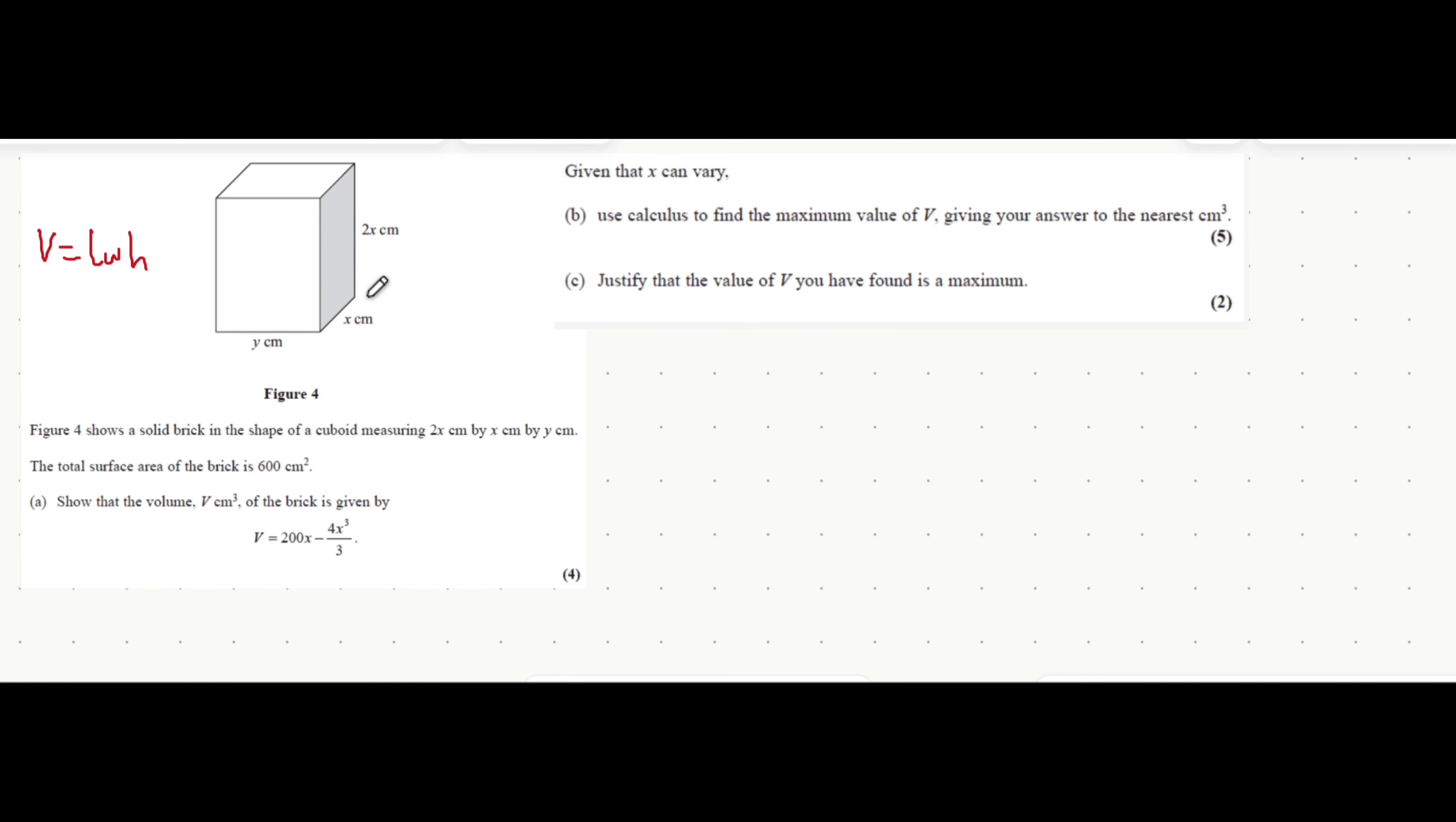It's told you those three values in terms of x and y. It's also told you the total surface area is 600 centimeters squared. You can use that to form an equation which will be useful later. Let's use that right now because it definitely will be useful. The total surface area is the area of all six faces of the cuboid.